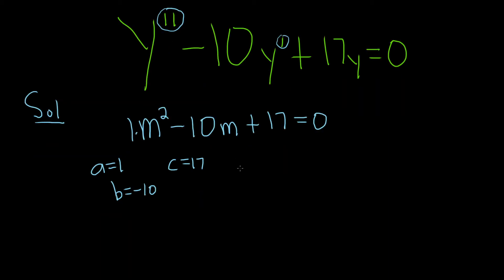So recall the quadratic formula says that it's negative b plus or minus the square root of b squared minus 4ac, all divided by 2a.